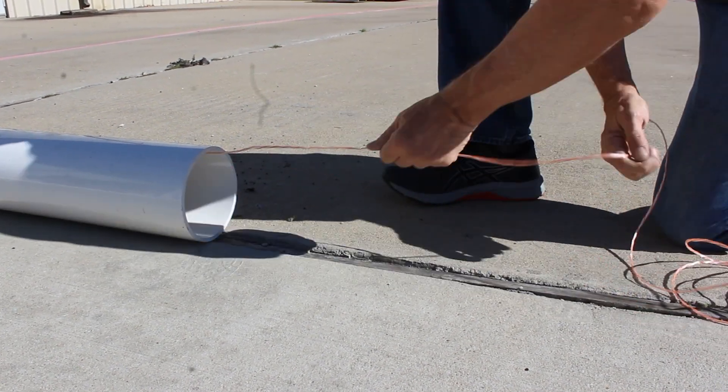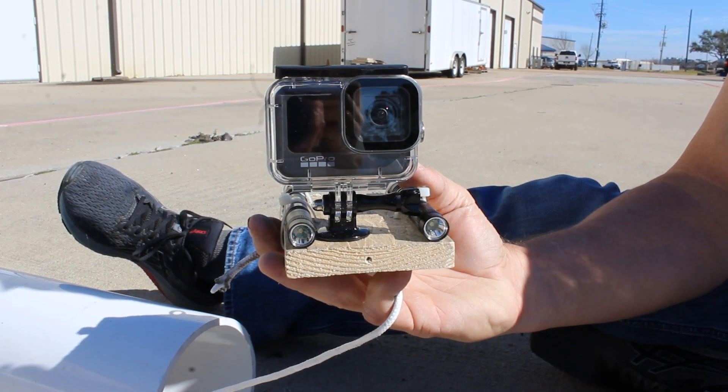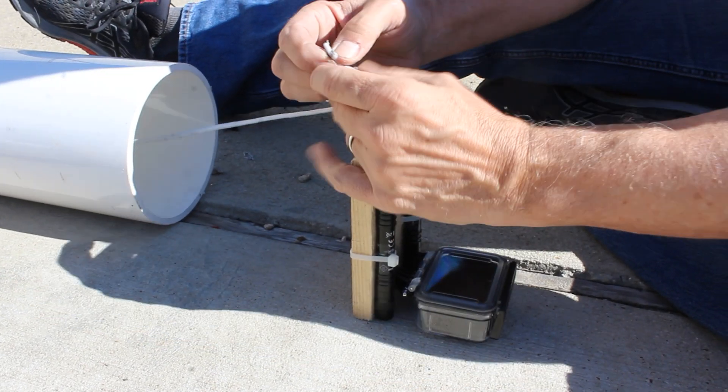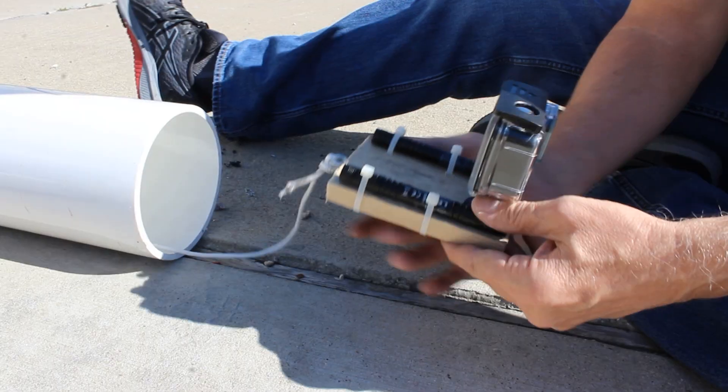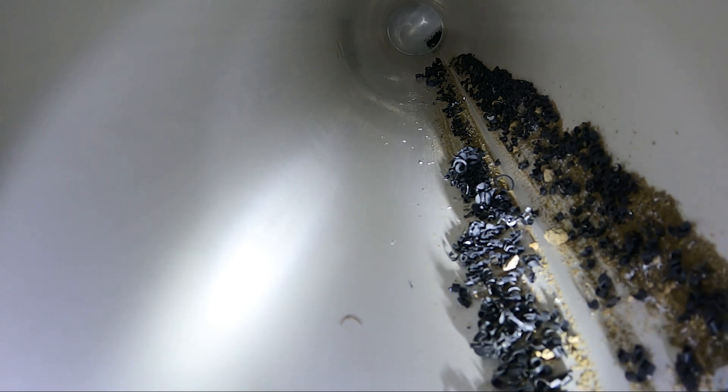Here we have our GoPro that's going to be simulating our boroscope. Now we're going to take our boroscope and tie it to the end of the rope. Now we're going to pull the boroscope through the pipe to see how much dirt and debris is inside.